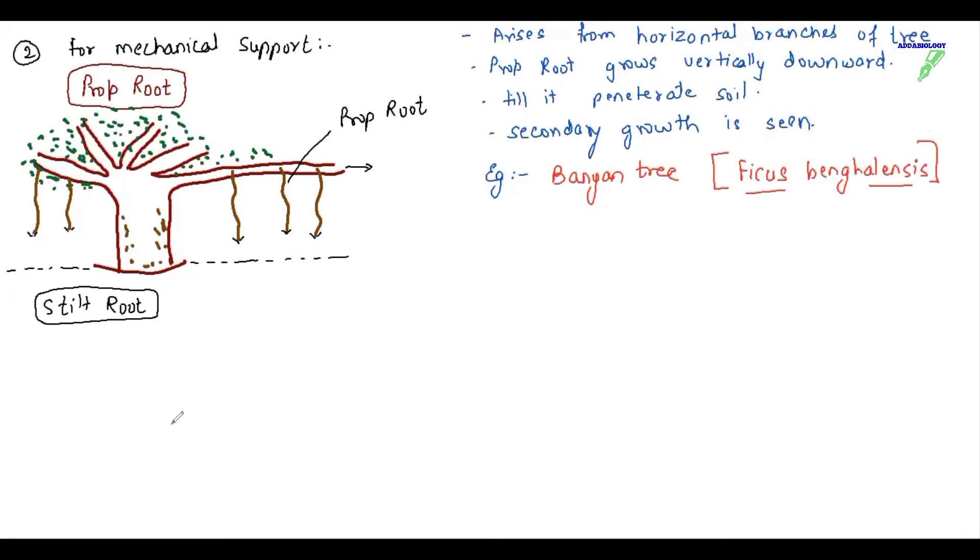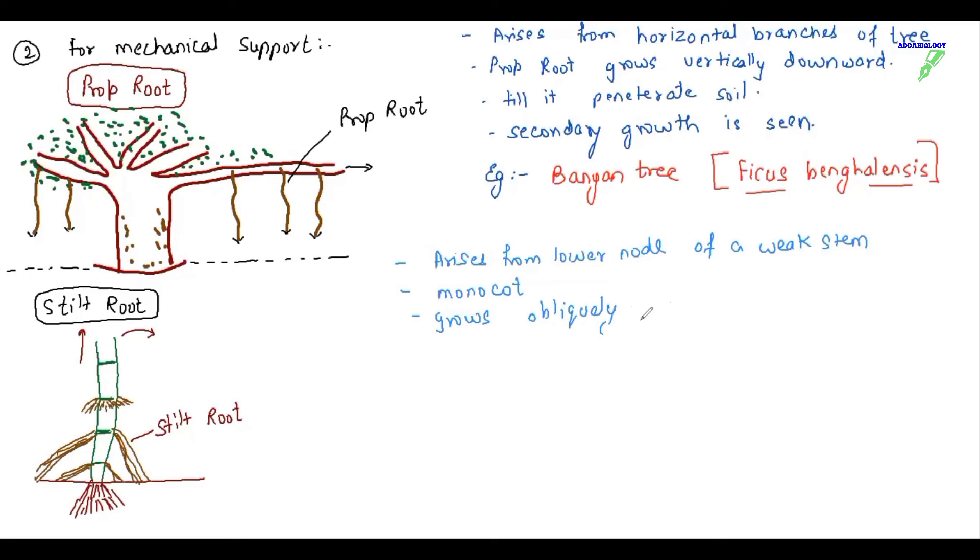Let's talk about stilt root. Stilt root is seen in case of sugarcane, in case of maize, where the adventitious roots are not that much long enough to support the length or the weight of the sugarcane. They should not fall on each other. So from the lowermost node, what happens, the root arises and this root is called stilt root. Stilt root arises from the base of the node, lowermost node. So stilt root arises from the lower node of a weak stem. It is seen mostly in monocot, grows obliquely downward and penetrates the soil. Stilt roots, they will provide only support. They are not going to absorb water or mineral. It has much folded multiple root cap. Example is sugarcane, maize, Khevda, Pandanus.